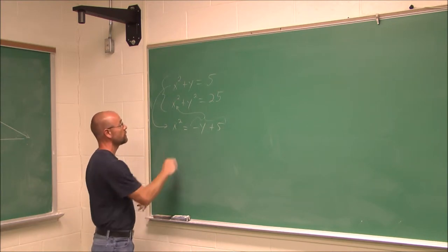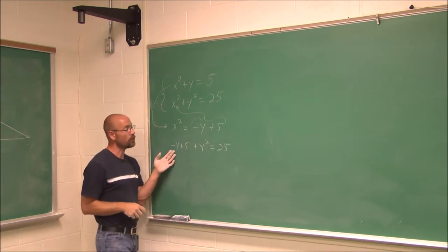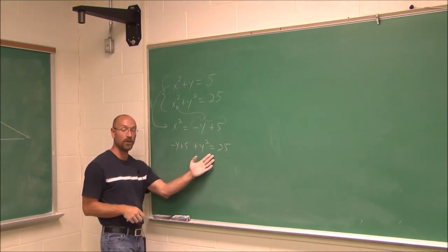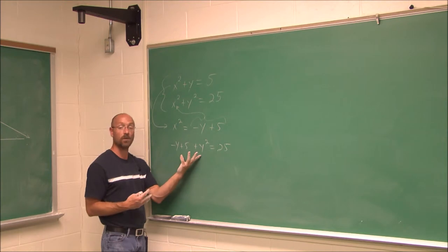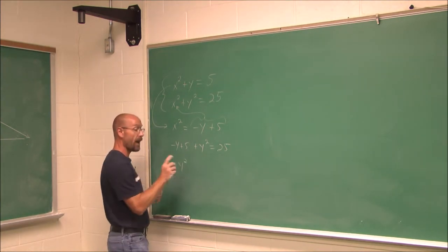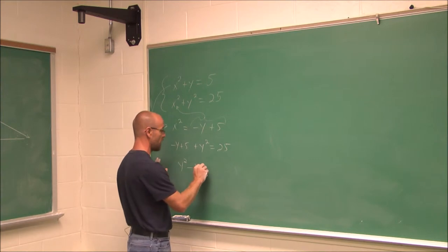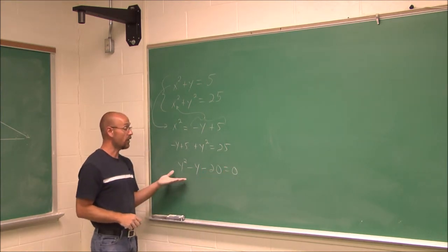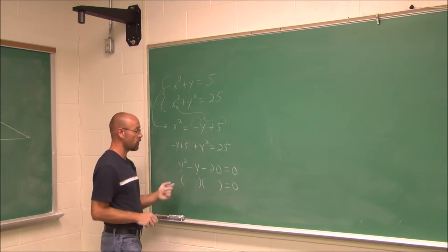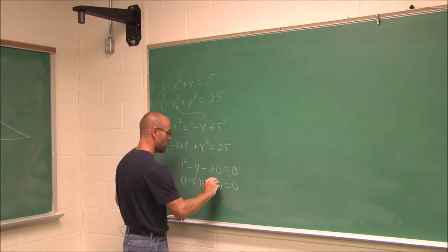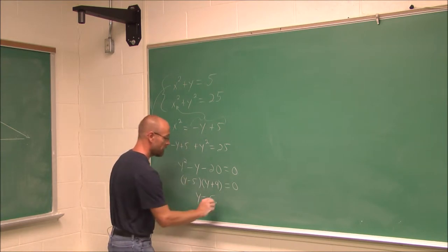Now I can substitute. This value — negative y plus 5 — is x squared. Plugging it into the second equation gives negative y plus 5 plus y squared equals 25. What we have here is a new equation in only one variable. This is a quadratic equation, so I write it in standard form and set it equal to 0: y squared minus y minus 20 equals 0. This factors as (y minus 5)(y plus 4) equals 0. By the zero factor theorem, y equals 5 or y equals negative 4.